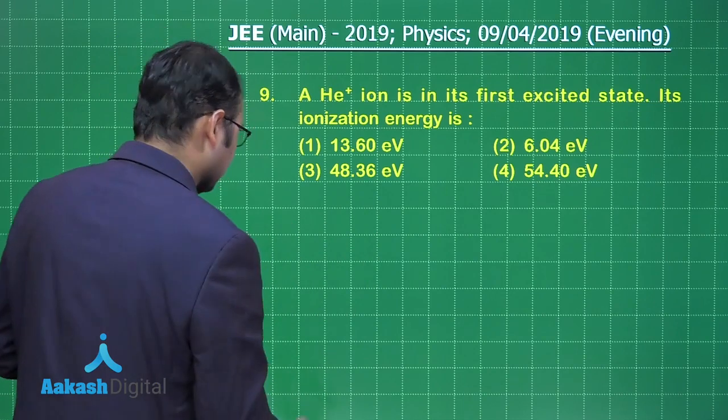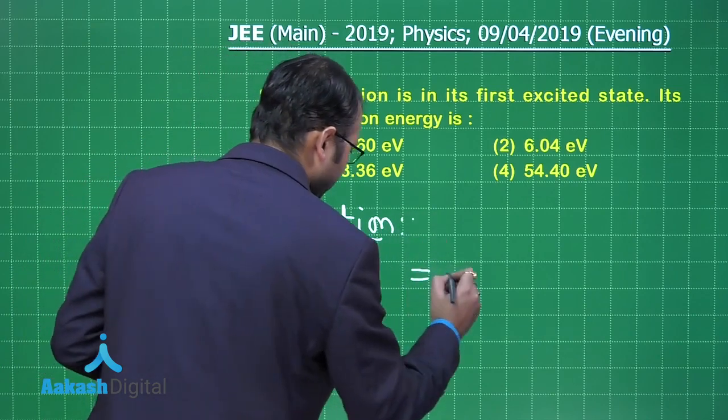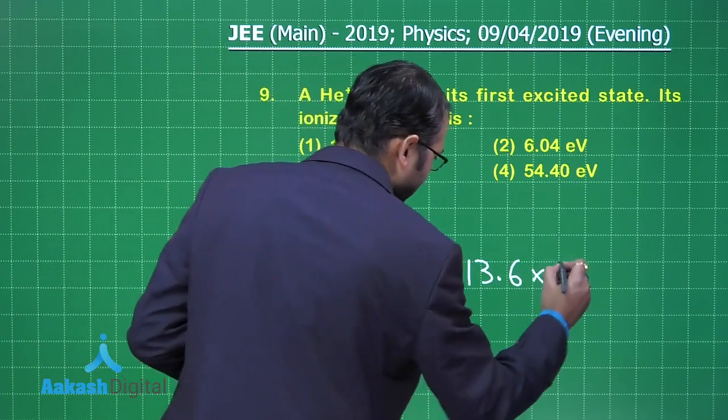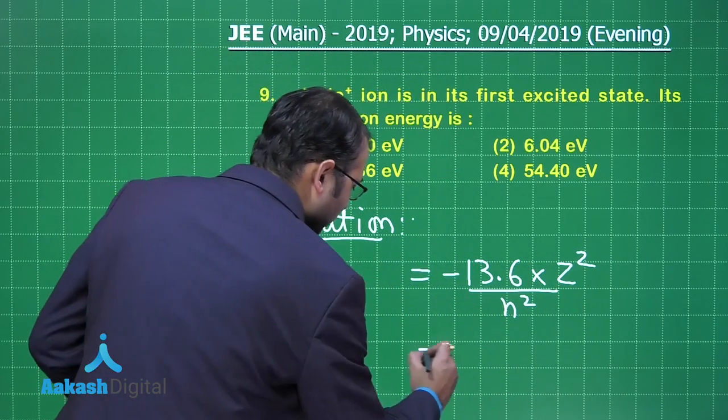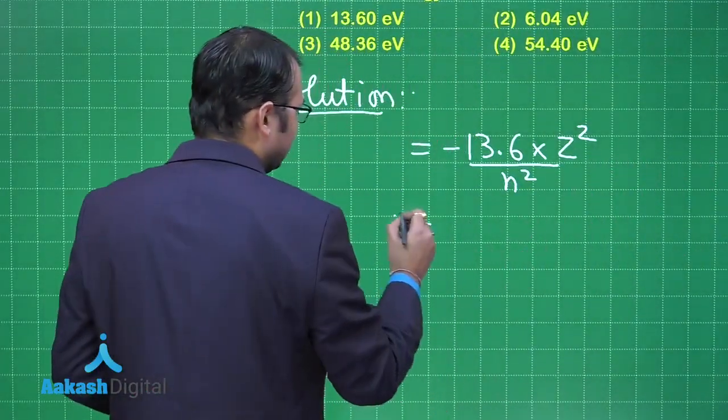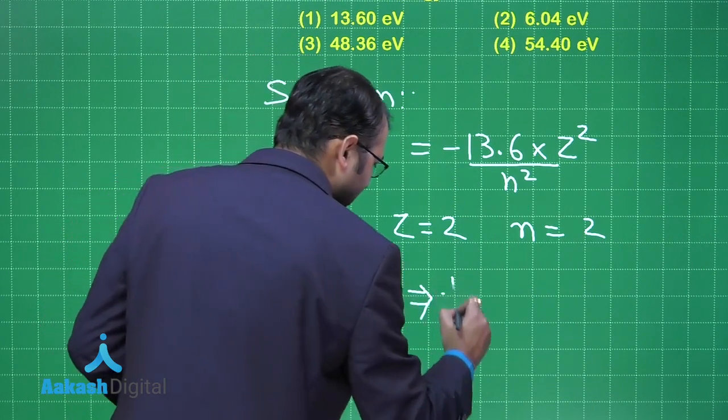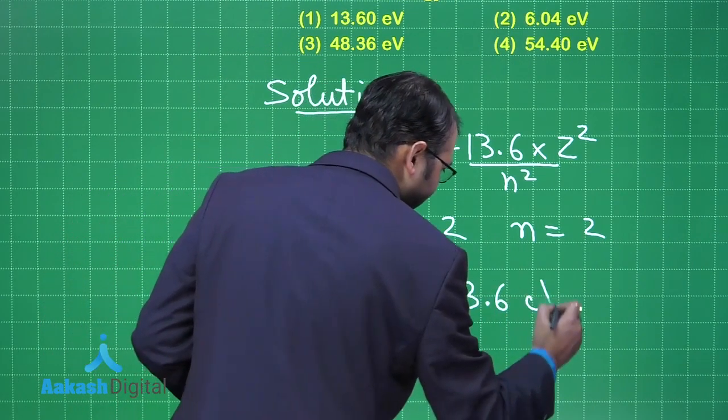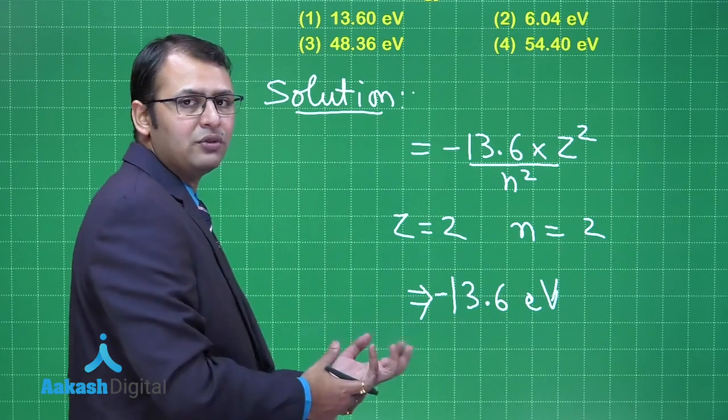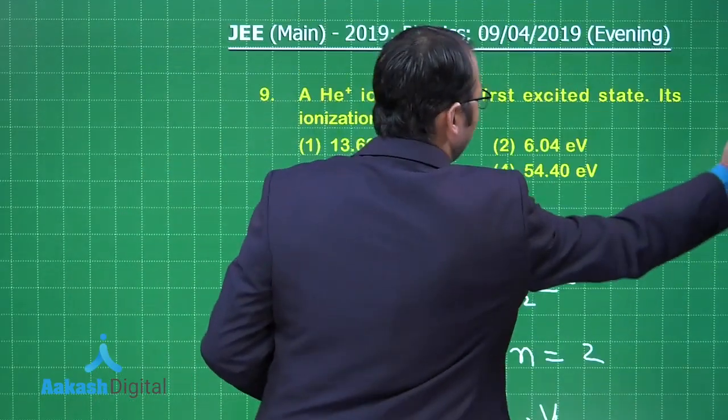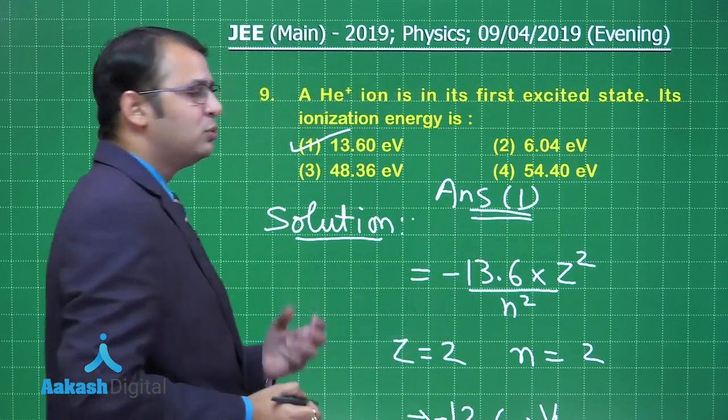So it's very easy. That would be minus of 13.6 into z square by n square electron volt per atom. So if you just put down the values in this case, for helium z is equals to 2 and n will be taken as 2. When you put on the values, you will get the value to be minus 13.6 eV. This is the energy which is with the orbit, the negative energy. In order to ionize it, you have to give the same amount of energy back so that it can be liberated, and the answer here would be option number one.